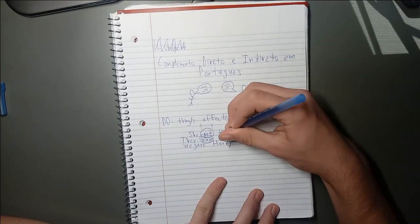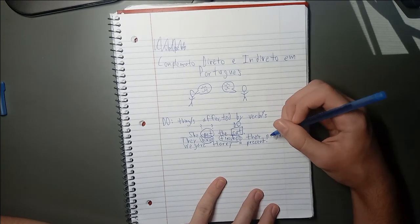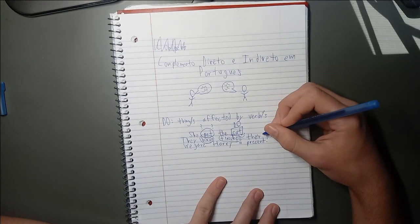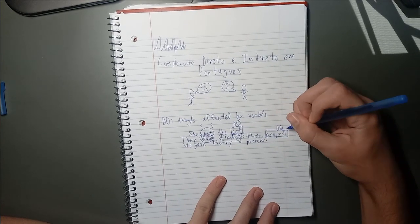In the second sentence, there are two verbs, have and finish. So, what has been finished? Their project has been finished. So, project is the direct object of the sentence.